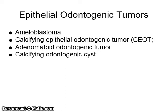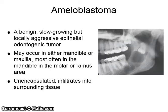Epithelial odontogenic tumors include ameloblastoma and calcifying epithelial odontogenic cyst. Ameloblastoma is a benign, slow-growing, but locally aggressive epithelial odontogenic tumor. It may occur in either the mandible or maxilla, most often in the mandible in the molar or ramus area. It is unencapsulated and infiltrates into the surrounding tissue.